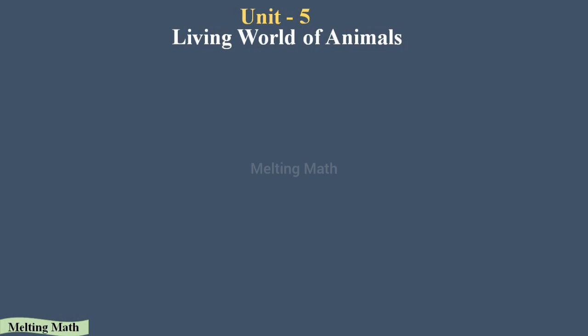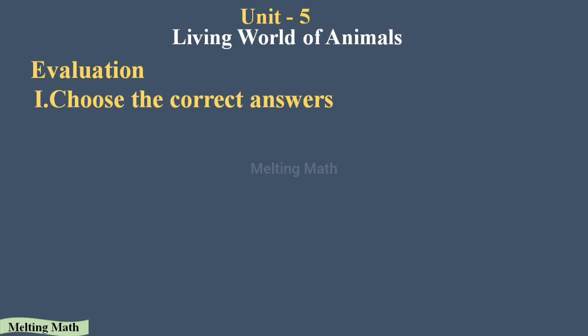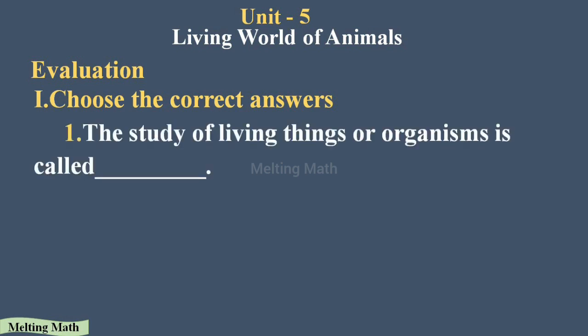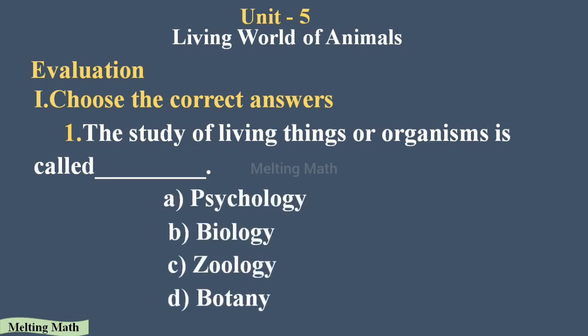Let's get into the questions. First, choose the correct answer. Question one: the study of living things or organisms is called dash. Options are psychology, biology, zoology, or botany. We all know it's biology. The study of living things or organisms is always called biology. Option B is the correct answer.